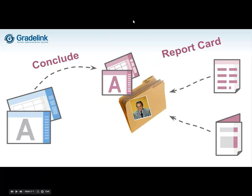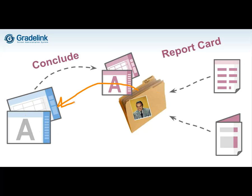So if I change a grade on a transcript and then go into the corresponding grade sheet and re-conclude it, any change I made to the transcript no longer applies. That's correct. When you conclude a class, you're adding something to the permanent record. When you un-conclude, you're taking it away, so it's no longer there to be edited anymore.